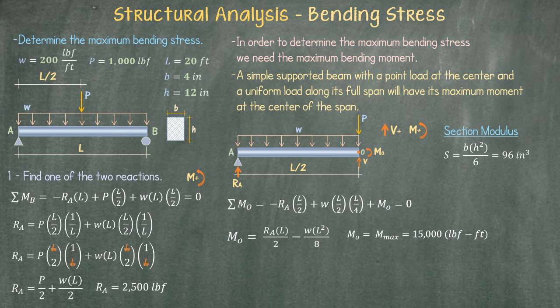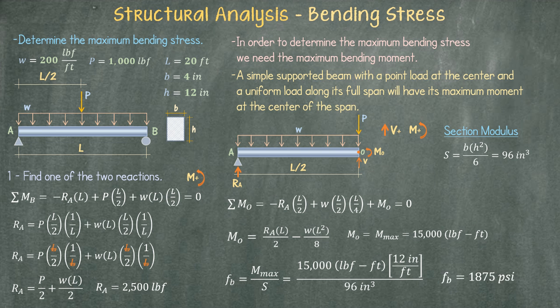Finally, we determine the maximum bending stress by taking our maximum moment and dividing it by the section modulus. There is a small final step in order to get the correct answer, that is to convert our moment to pounds inch or to convert our section modulus to cubic feet. I have decided to convert the moment to pounds inch. Our result is 1875 pounds per square inch.